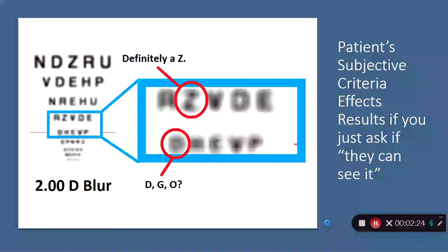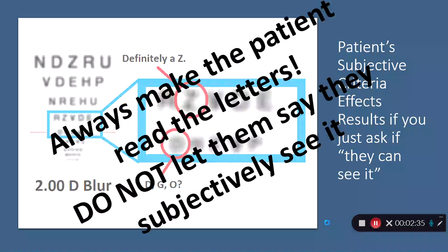So they're randomly guessing and they feel different levels of confidence in it. So if we actually just subjectively ask the patient, can they see it? They may choose to decide they can or cannot see it subjectively, rather than actually reading the letters, which they may or may not have guessed correctly. The point of this is to always make sure the patient reads the letters. Do not let them say subjectively, do they see it or not?